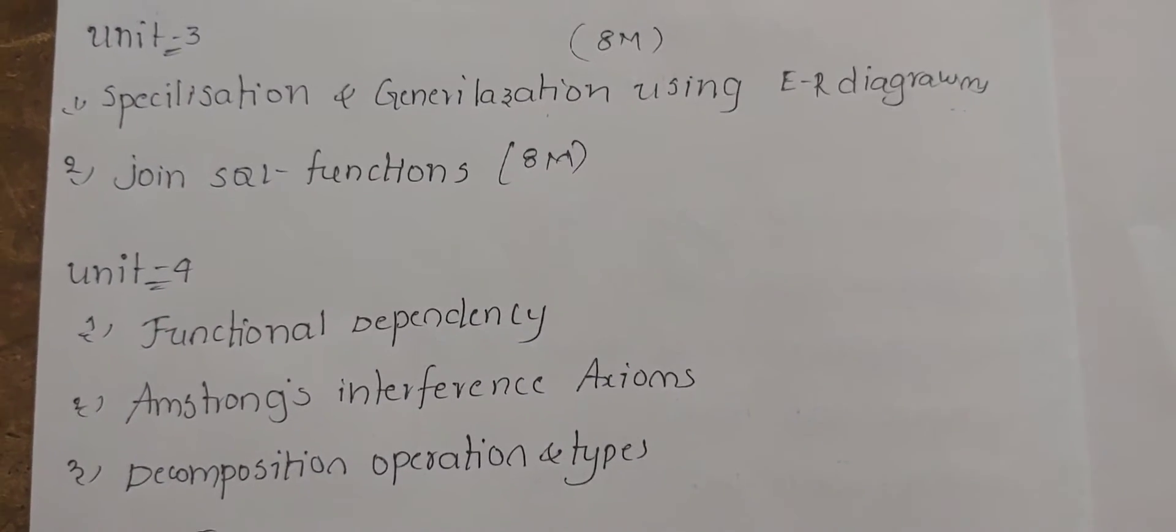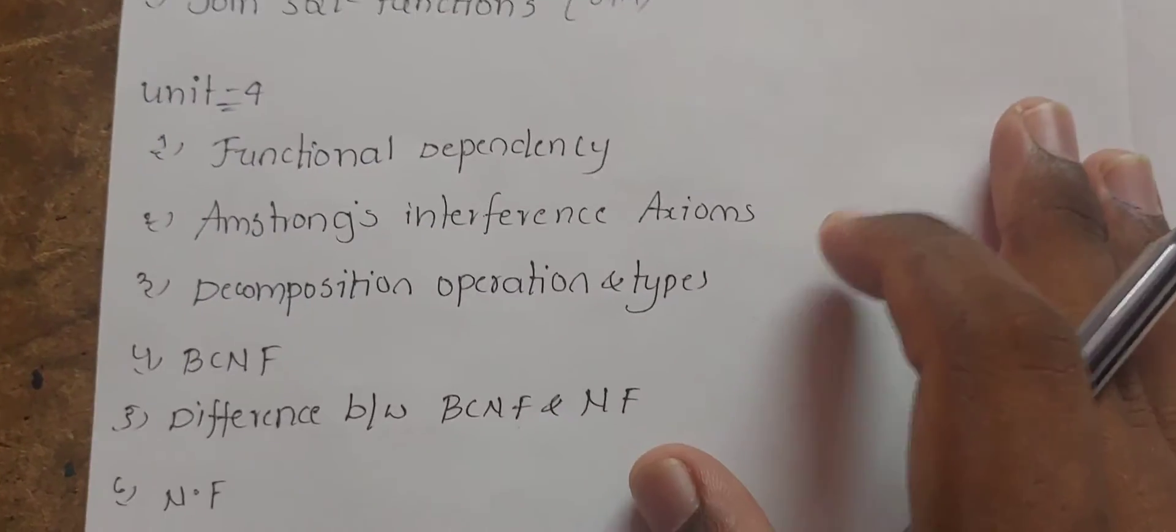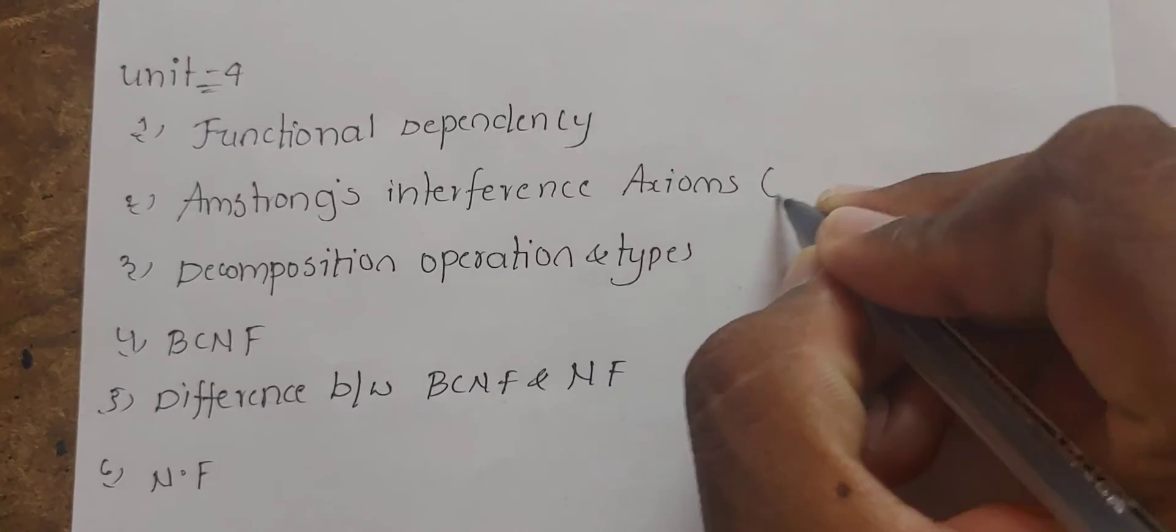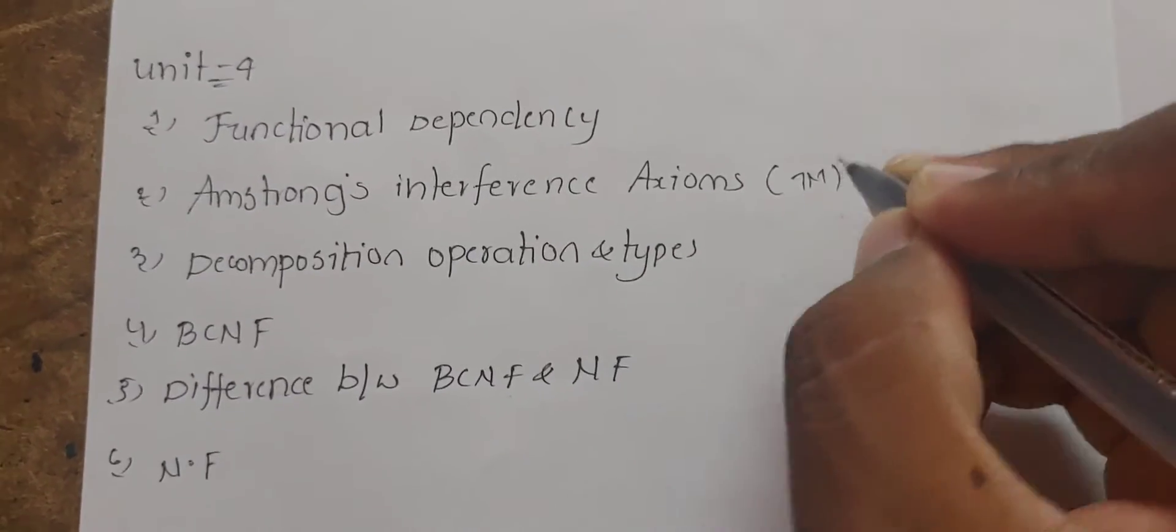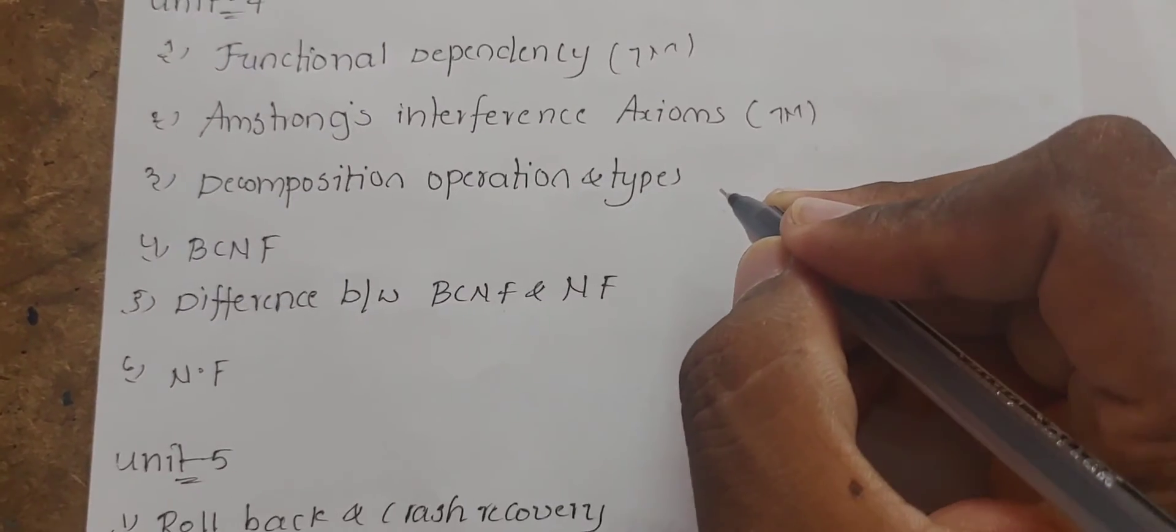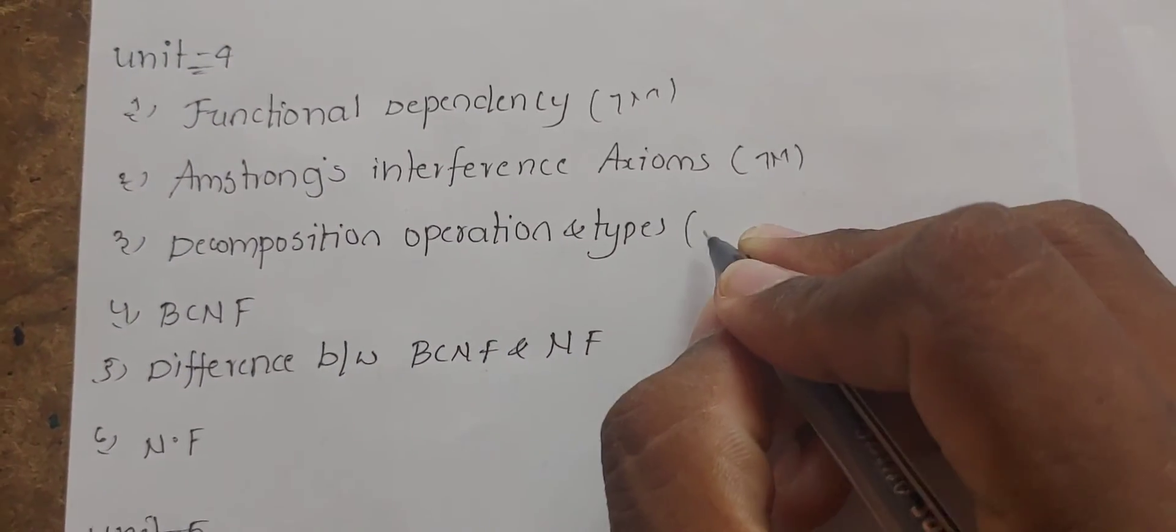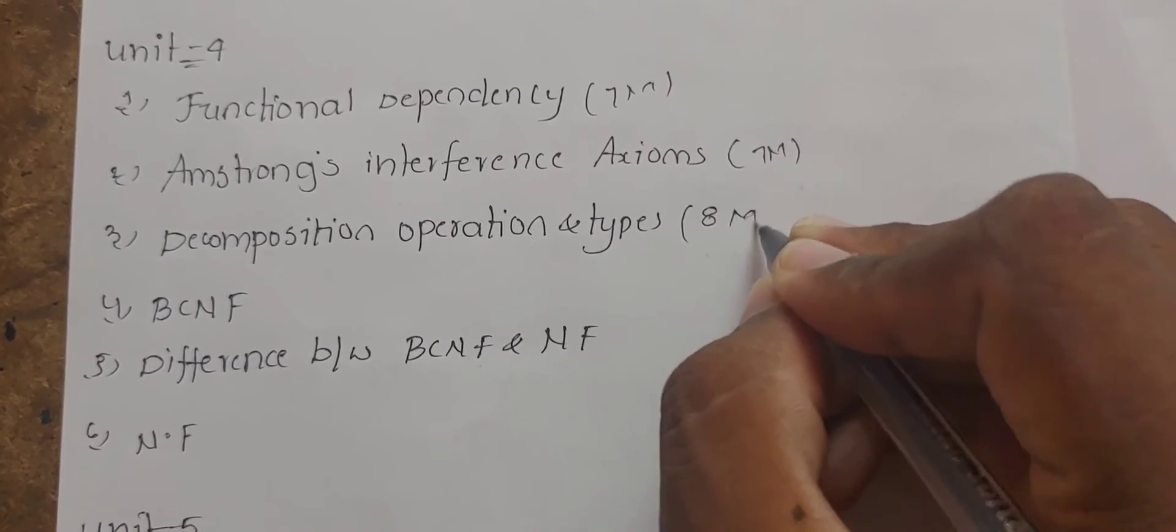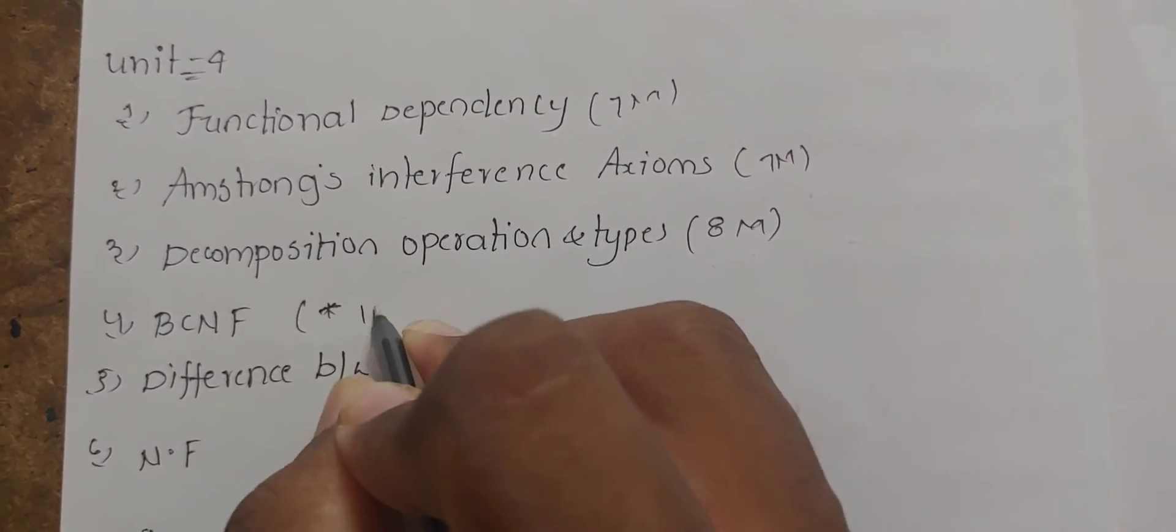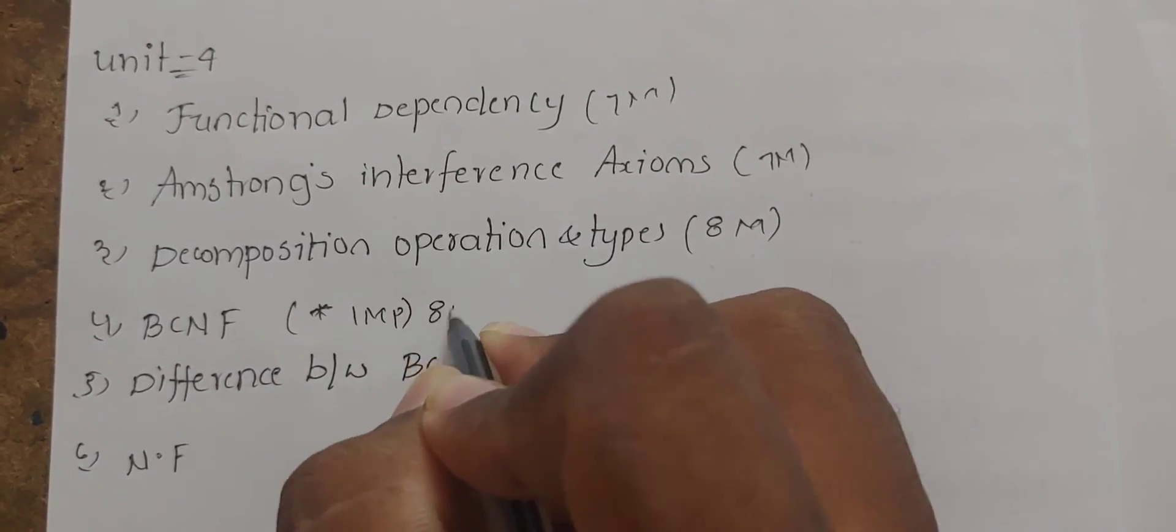Unit 4 - Functional dependency. Functional inference axioms. Functional dependencies. Decomposition operation and types - eight marks, already important. 3NF and BCNF - important question. Eight marks sure.